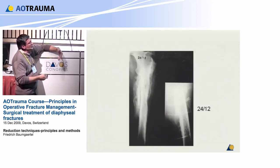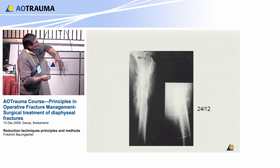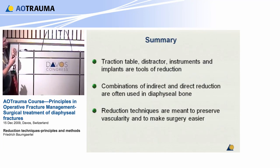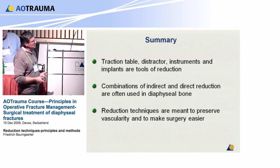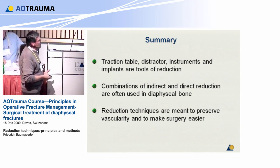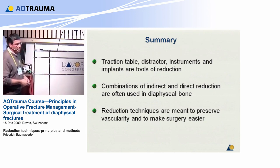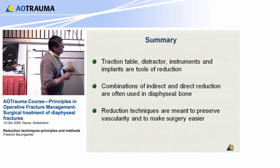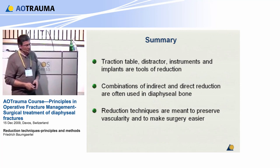Using indirect reduction techniques with your plates and your femoral distractor is certainly the way to go here. So the traction table, distractor, instruments, and implants are all tools of reduction. You will usually have indirect and direct reduction even in diaphyseal bone depending on the type of fracture. These reduction techniques are meant to preserve the vascularity and make your surgery easier. Thank you very much.